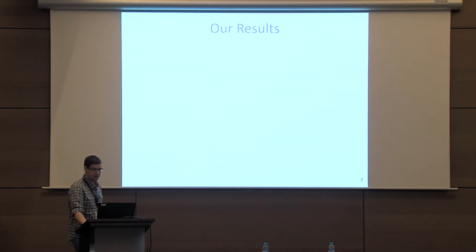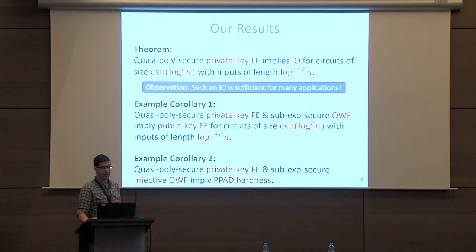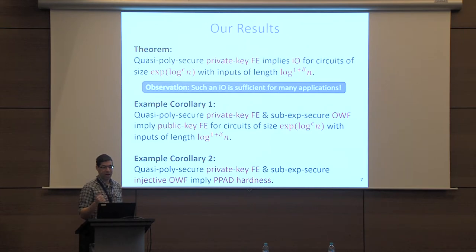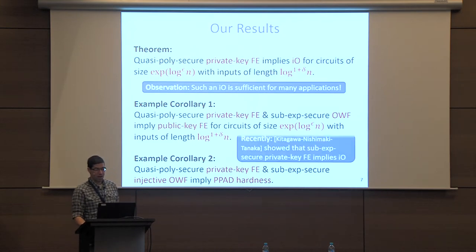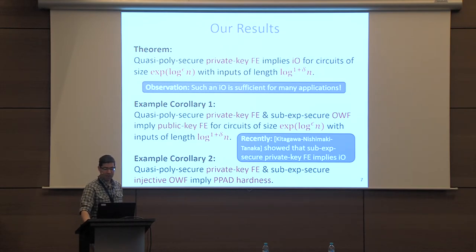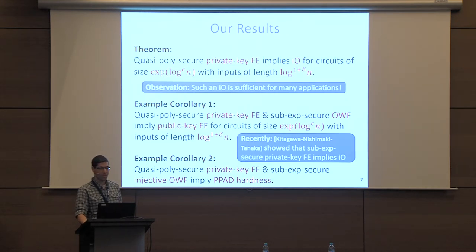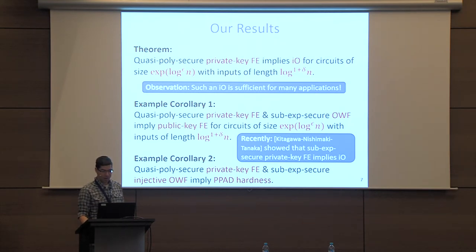The main theorem: we construct I.O. for circuits with polylogarithmic many inputs based on quasi-polynomially secure functional encryption, with two main applications. We note that very recently, Kitagawa, Nishimaki, and Tanaka uploaded a paper proving that private key FE implies full-fledged I.O., improving over our theorem, though using completely different techniques. We believe our work is still interesting and instructive.